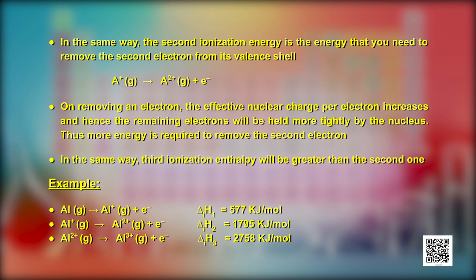Look at the successive ionization enthalpies of aluminium. The second ionization enthalpy is always greater than the first, and the third is greater than the second. On removing an electron, the effective nuclear charge per electron increases, and hence the remaining electrons are held more tightly by the nucleus. Thus, more energy is required to remove the second electron, and for the same reason the third ionization enthalpy is larger than the second.